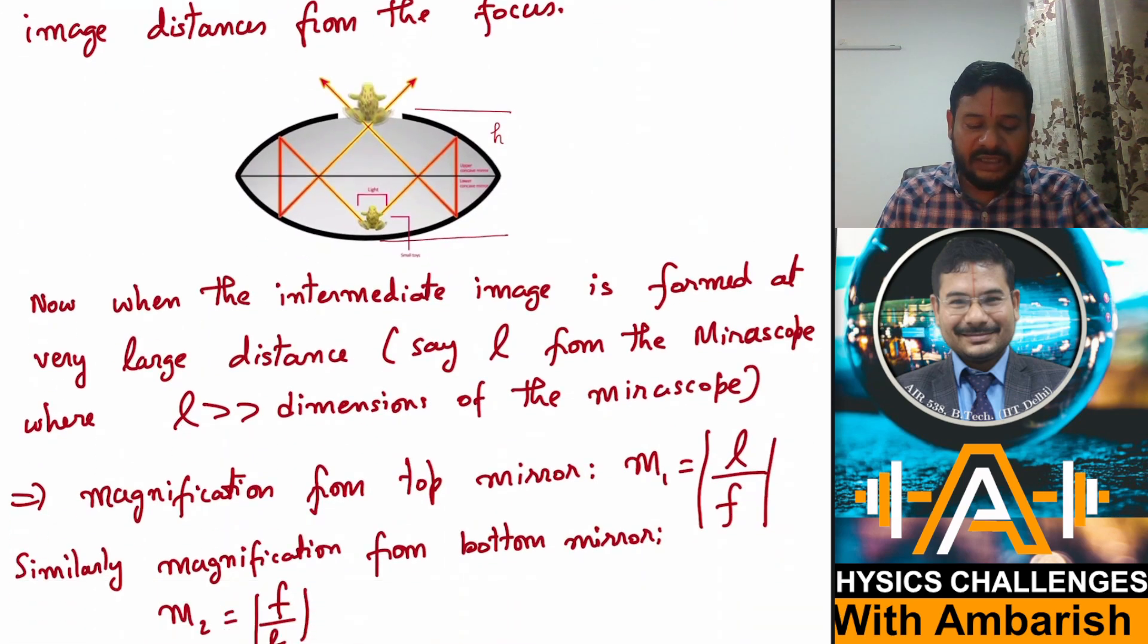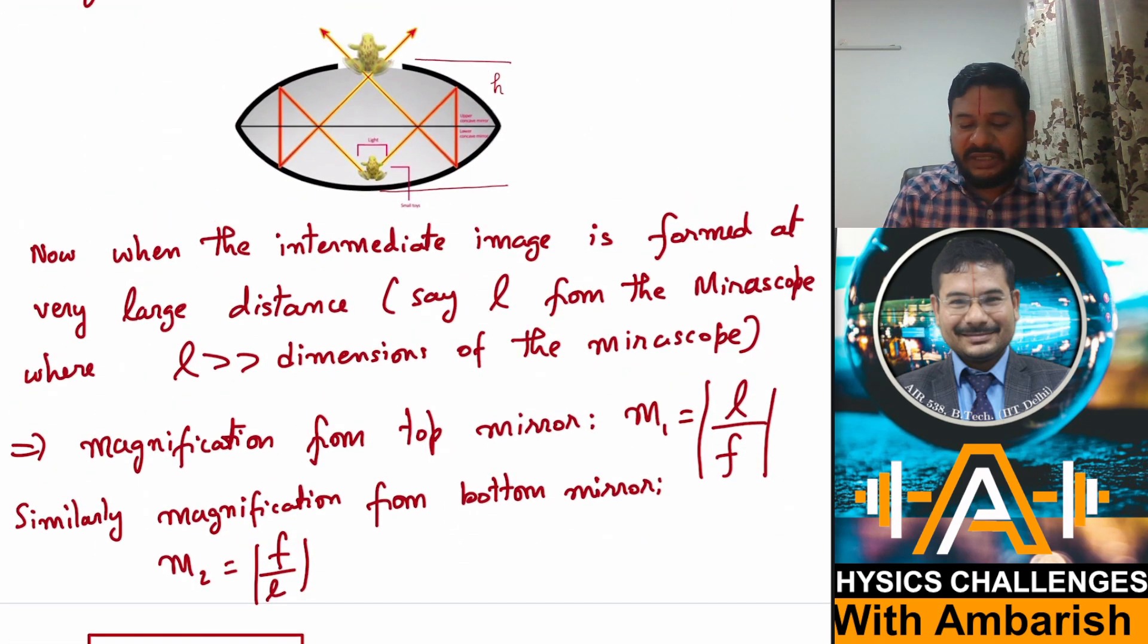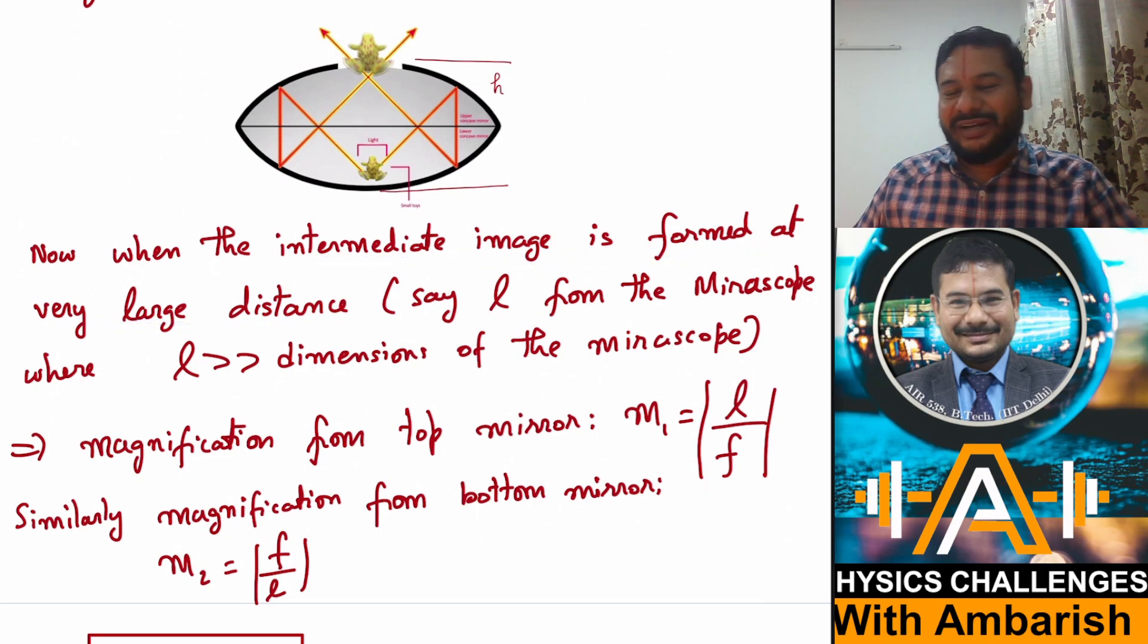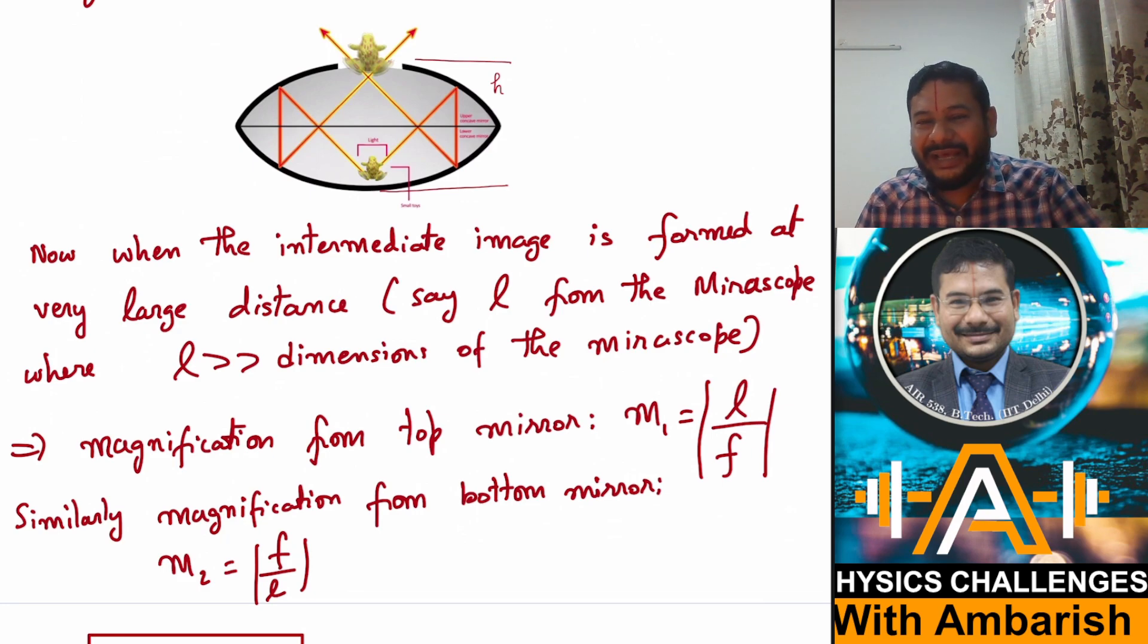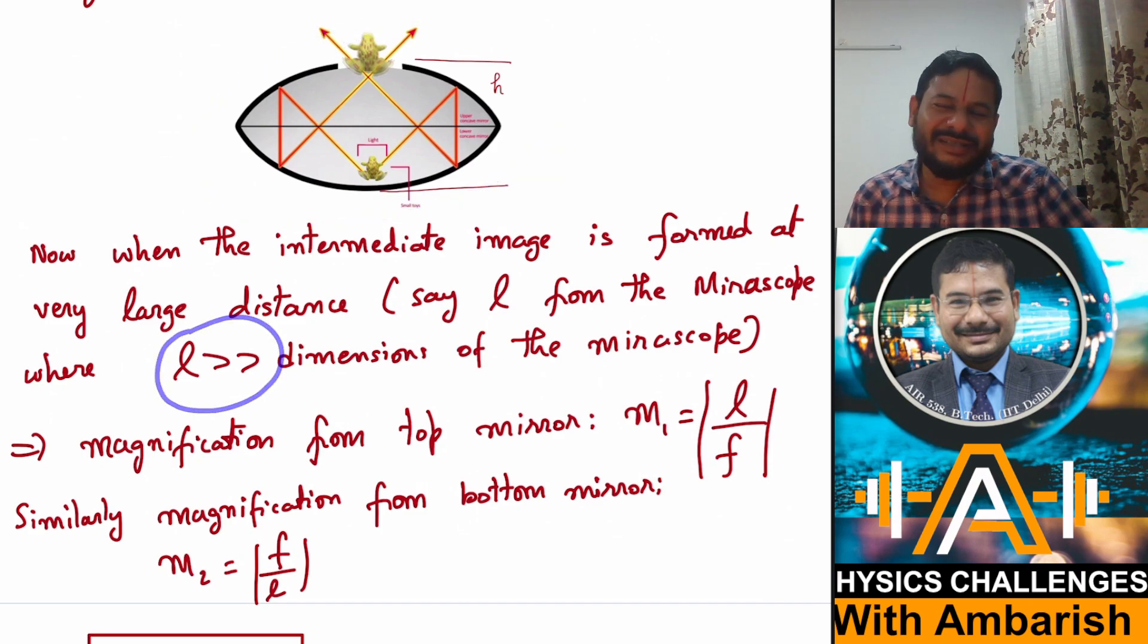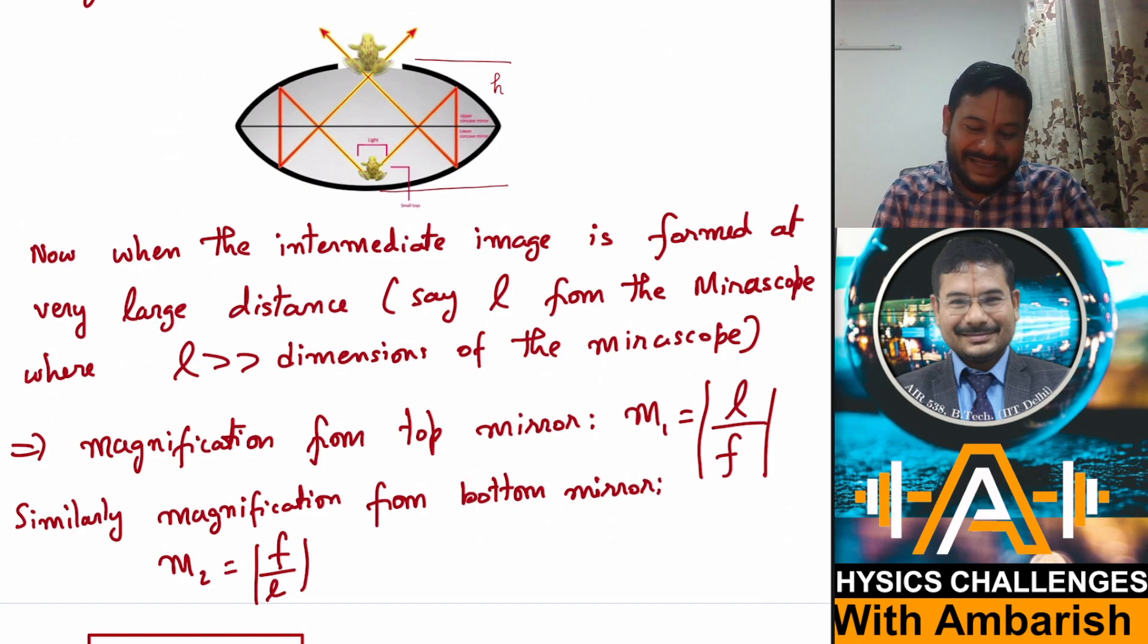So this is the standard result that you learn when you learn the Newton's formula for lenses or mirrors. Here X and Y respectively, the object and image distances from the focal. So now what happens? See in our case, when the intermediate image is formed at very large distance, let us say, I don't want to deal with infinity. So let's call the large distances L. But know that that L is same for almost same for the upper mirror as well as the lower mirror. For example, suppose your focal length is of the order of meters. And let us say L is one light year. Just for argument's sake, then you can say that this L is equidistant from the focus of the upper mirror as well as the focus of the lower mirror.